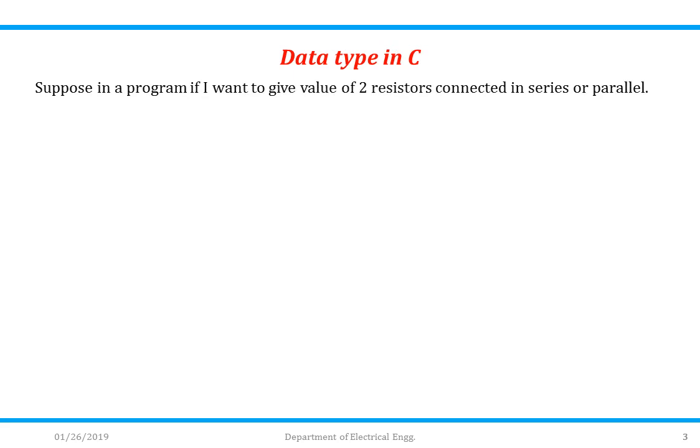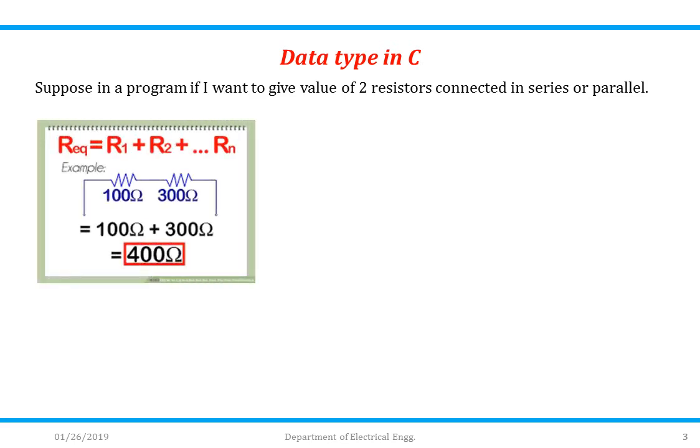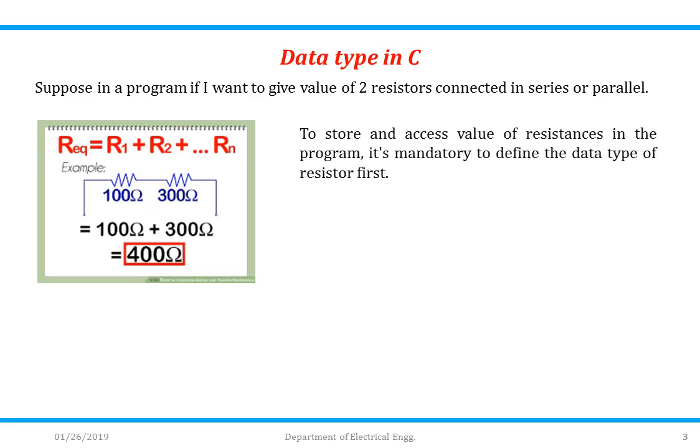Suppose in a program if I want to give the values of two resistors which are connected in series, let us consider this example. If I want to calculate R equivalent, when two resistances are connected in series, R equivalent equals R1 plus R2. So I need to give value of R1 equal to say 100, value of R2 equal to say 300, and then R equivalent will be equal to 400.